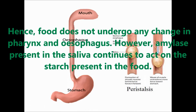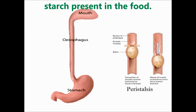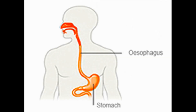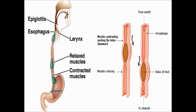However, amylase present in the saliva continues to act on the starch present in the food. Hence, the esophagus acts only as a bridge between the mouth and stomach, passing food from mouth to stomach. Key points: Esophagus connects the pharynx with the stomach, and the peristaltic movements of muscles in the esophagus move the food into the stomach.